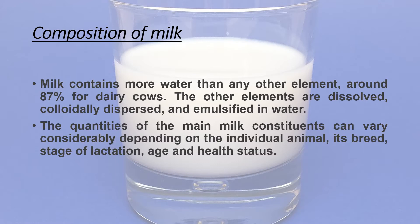Milk contains more water than any other element, around 87% for dairy cows. The other elements are dissolved, dispersed and emulsified in water. The quantities of the main milk constituents can vary depending on the individual animal or species, its breed, stage of lactation, age and health status. So it varies according to the species.